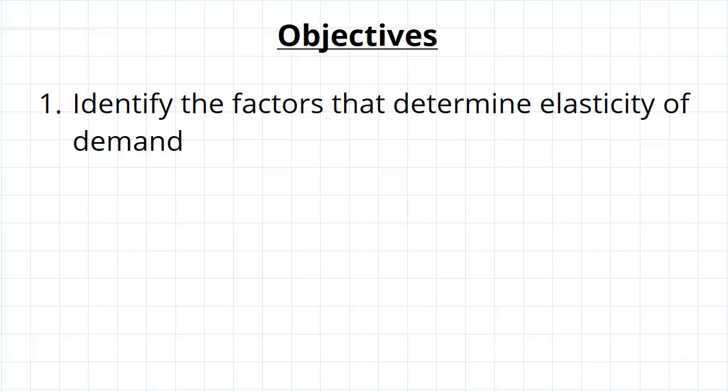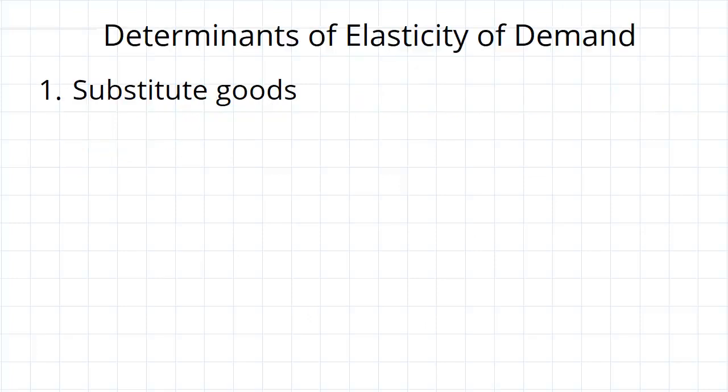So first we'll look at the factors determining elasticity of demand. Factor number one is the presence of substitute goods.